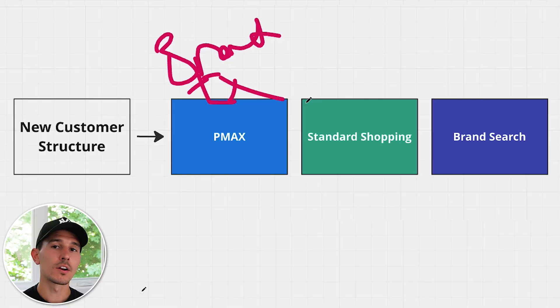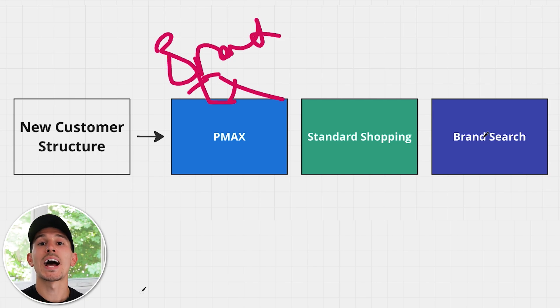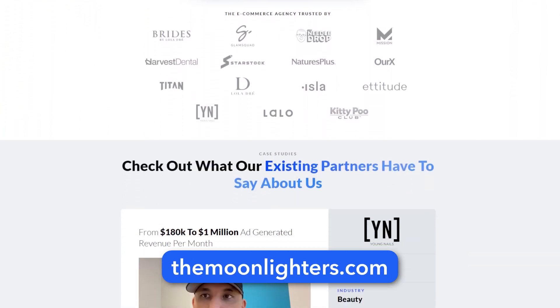The second piece is a standard shopping campaign that's allowed to do whatever it wants — it protects your existing terms so competitors can't eat up your shopping feed. Understand that the Performance Max campaign is going to return roughly 50% worse than the standard shopping campaign because that standard shopping is brand-inflated. Finally, you'll have a branded search campaign that's 99% branded terms and should return the highest ROAS in your entire account. If you want the exact strategies based on how much you're spending, watch the video on how I spent over $19 million on Google Ads, or go to themoodlighters.com to apply to work together.